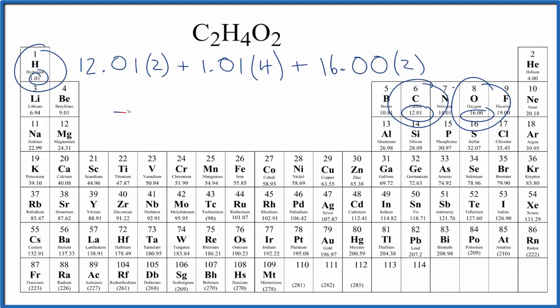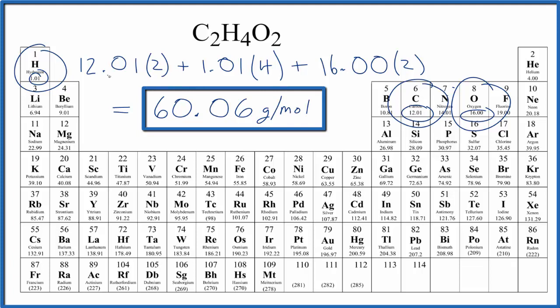When we do that, we get 60.06, and the units are grams per mole. My periodic table rounds to two decimal places here. So if you have a different periodic table, you might get a slightly different answer.